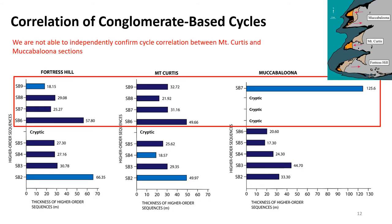We were able to confirm sequence correlation between Fortress Hill and Mount Curtis, but were not able to independently confirm cycle correlation with Makabaluna. In the interest of evaluating these sequence transitions downstream, we developed an argument on how these sequences might relate from Makabaluna to the first two incisions, based on sequence thickness and sedimentological characteristics.